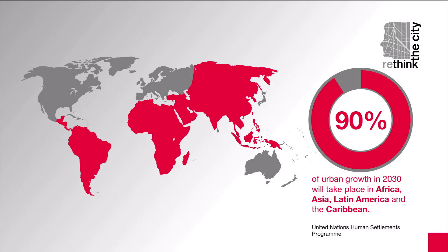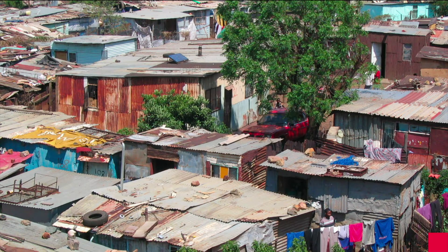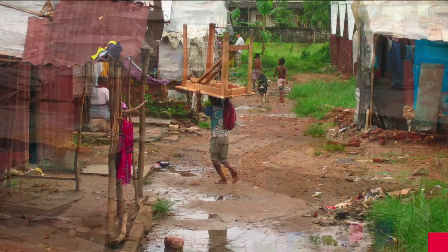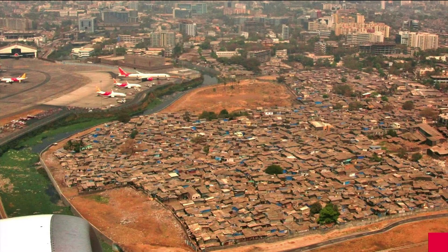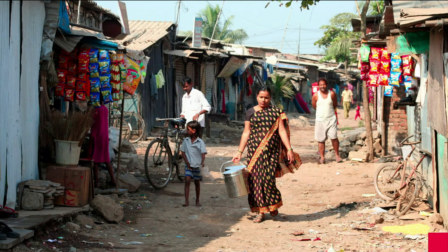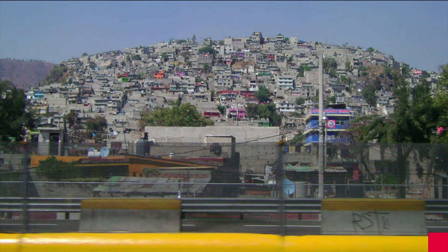A major urban problem in the Global South for many decades has been the widespread presence of slums and informal housing in bad conditions. This means poor physical quality of the dwellings and the surrounding areas, lack of basic sanitary services and ultimately unhealthy and unsafe living conditions for huge numbers of people.